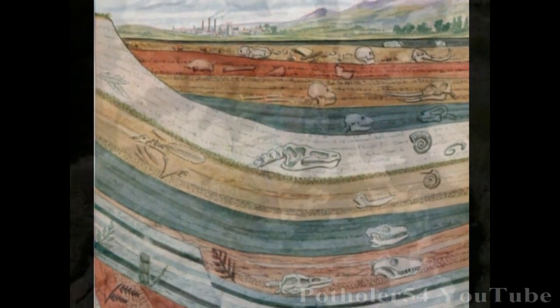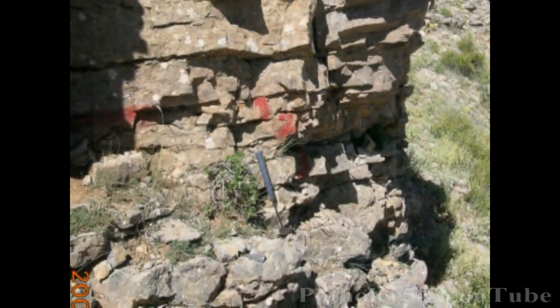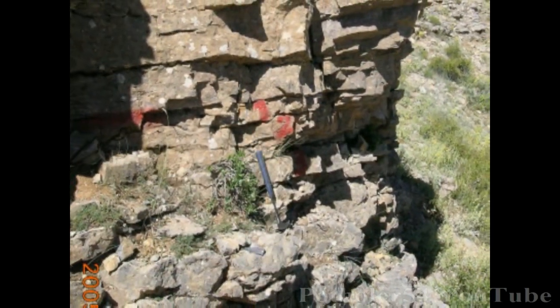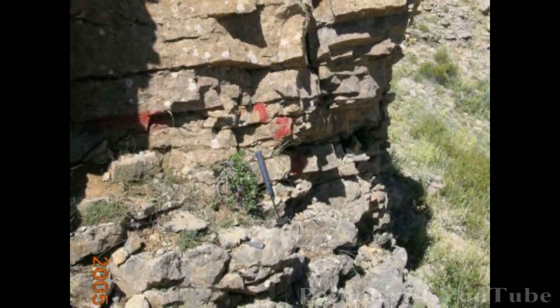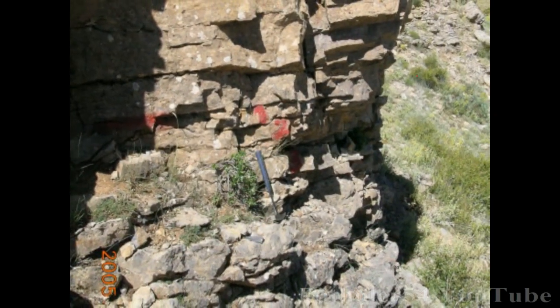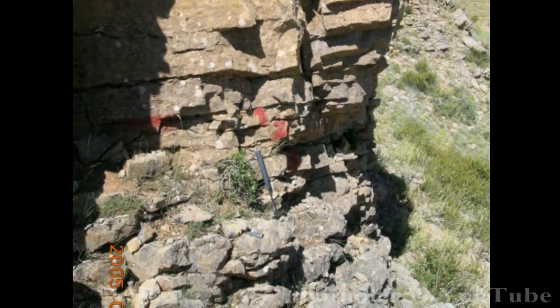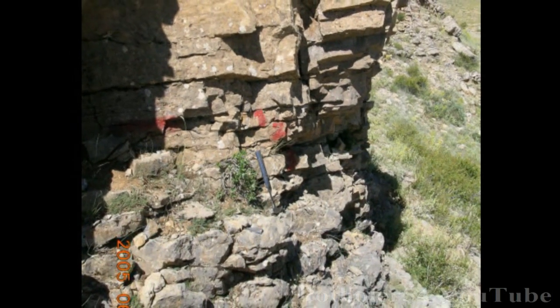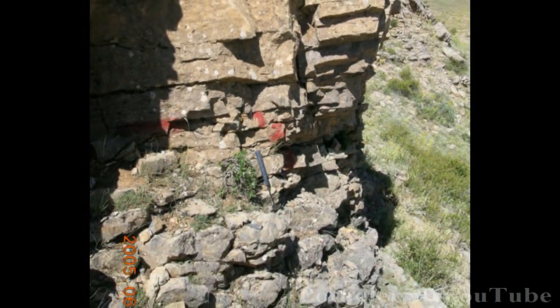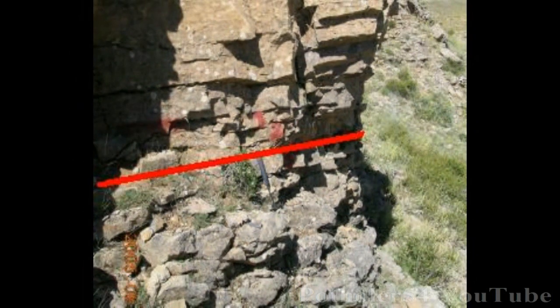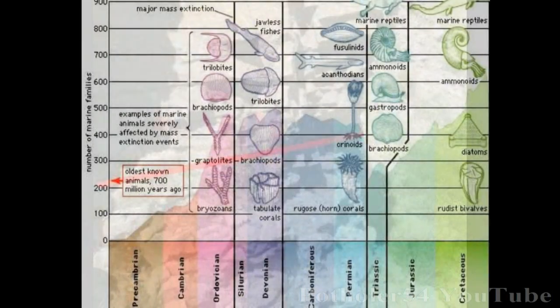But there were sudden disappearances. This layer of rock, for example, marks a catastrophic mass extinction about 250 million years ago. The rocks below this line are full of marine fossils, but in the rocks above, they're all gone.